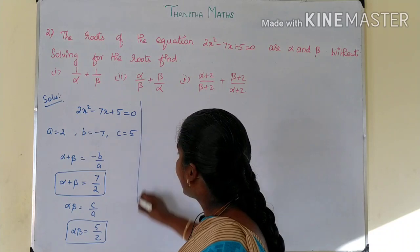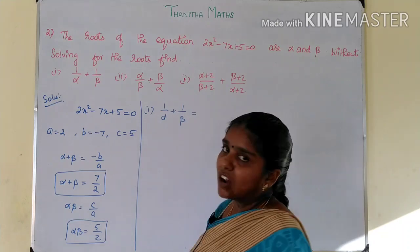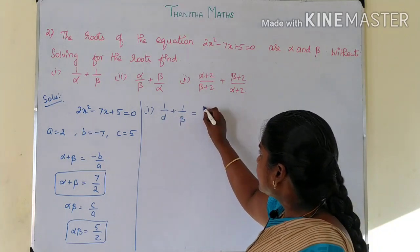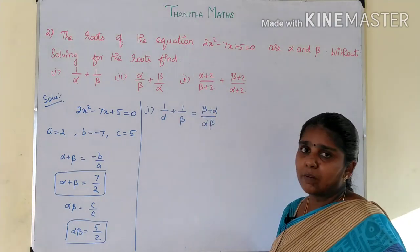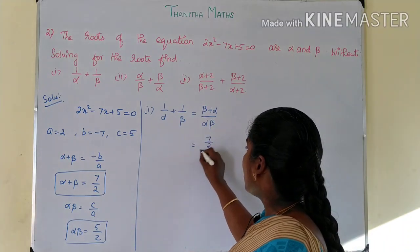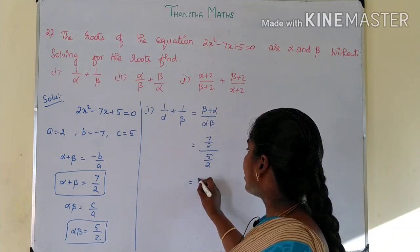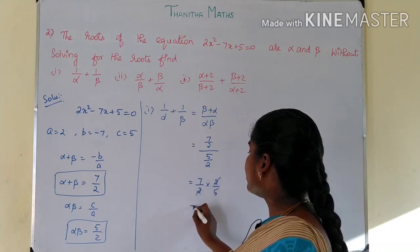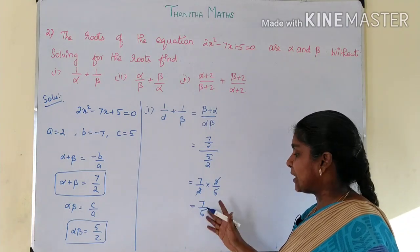Now we solve the first expression: 1/α + 1/β. This equals (α + β)/(α × β). Substituting, alpha plus beta is 7/2 and alpha times beta is 5/2, so this becomes (7/2) divided by (5/2). The 2s cancel, giving the answer 7 by 5.